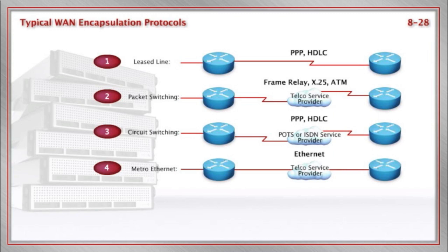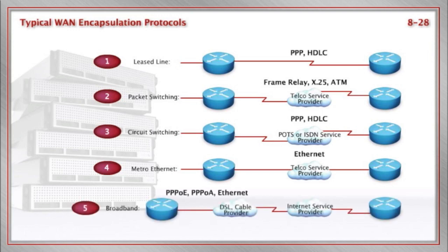Lately, we have a technology called Metro Ethernet that's exciting, where we take our Ethernet packets and send them into the service provider, and they send them to the next destination at a real high rate of speed. Finally, there are broadband options for our wide area networking that we have to recognize. These are things like DSL and cable high-speed options that can go to homes or to branch offices.